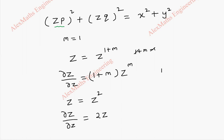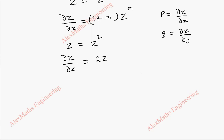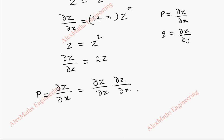Generally, we take small p as dou z by dou x and small q as dou z by dou y. Now we are going to take dou capital Z by dou x, which is our capital P. But this can be rewritten as dou capital Z by dou small z, into dou small z by dou x. Now capital P will become: dou Z by dou z is 2z, and this is small p. So from this we get capital P divided by 2 equals z into p.